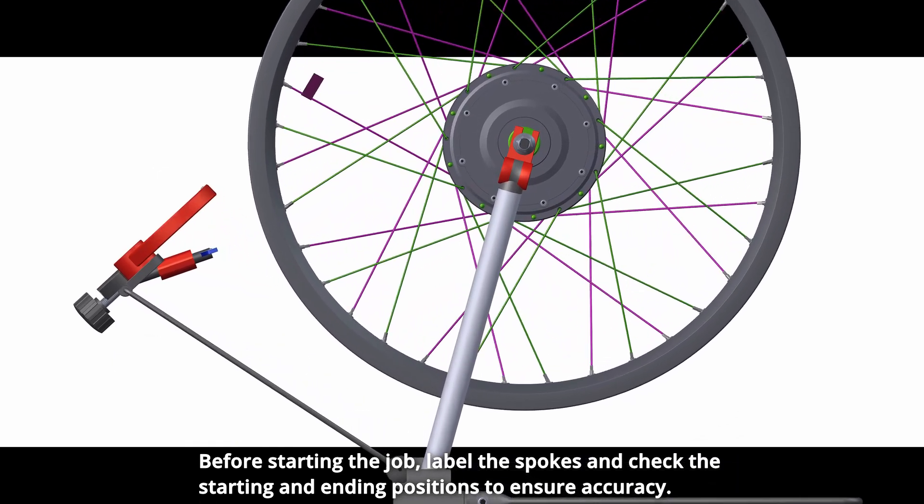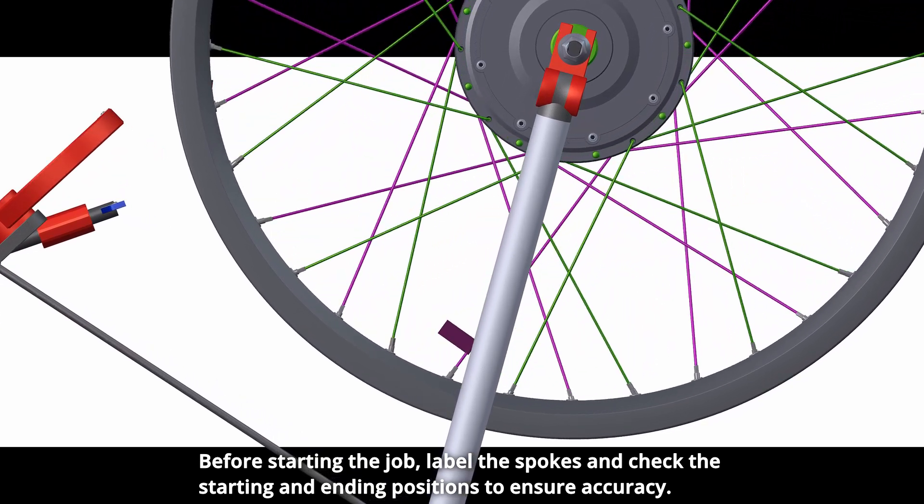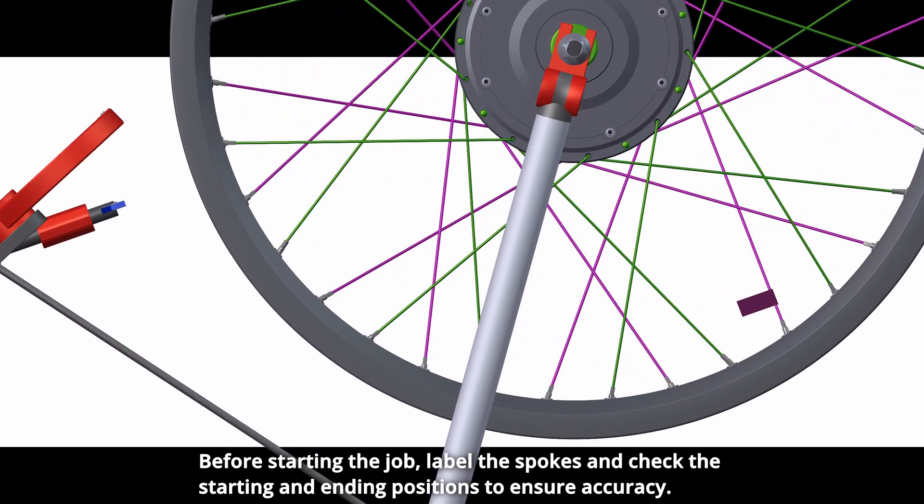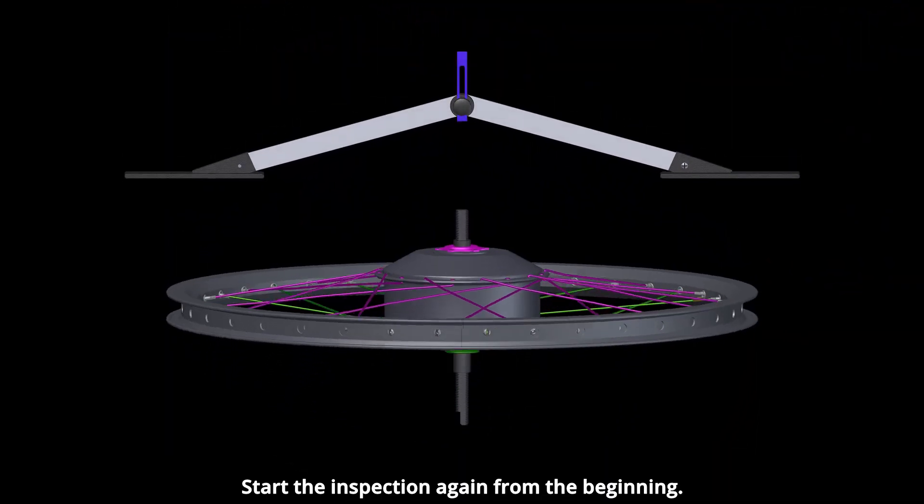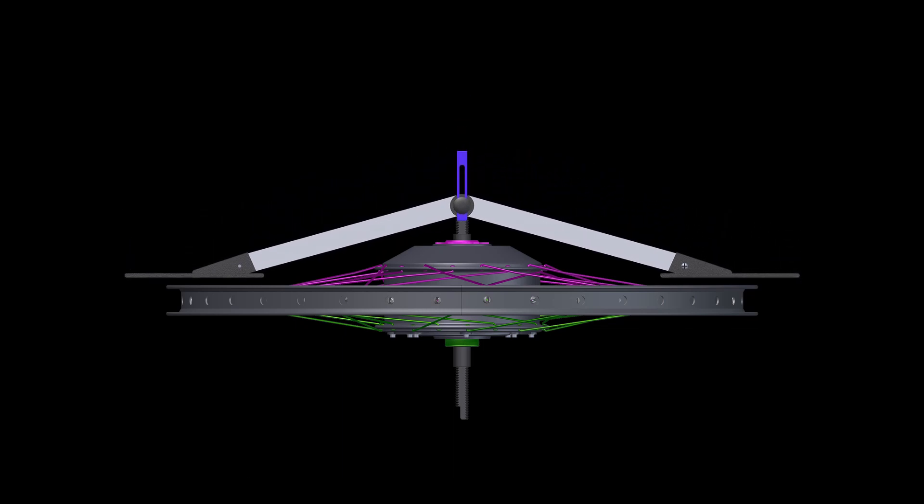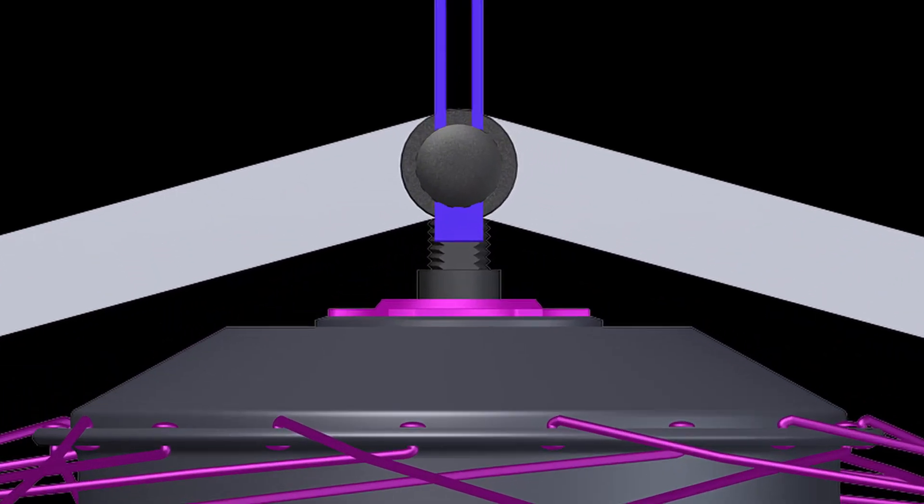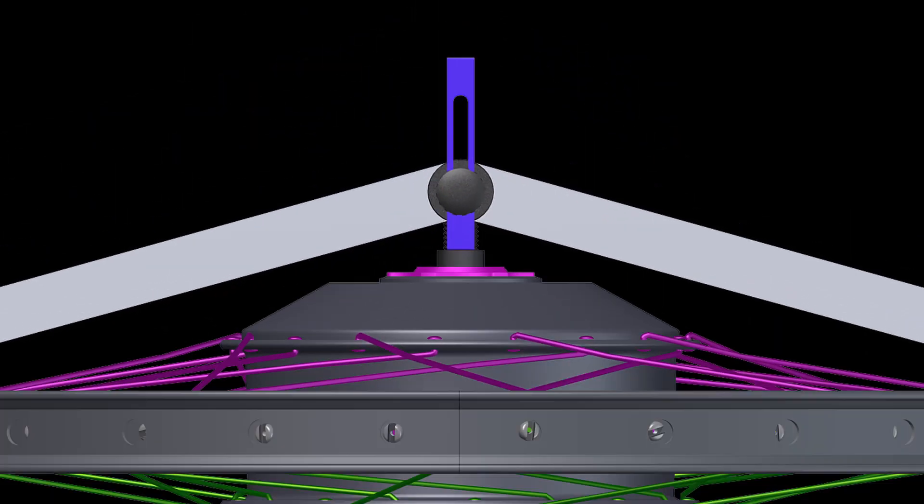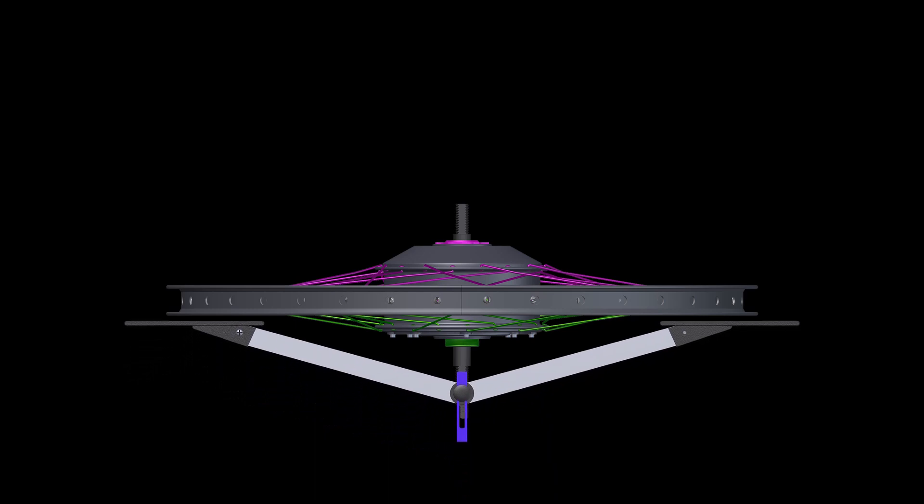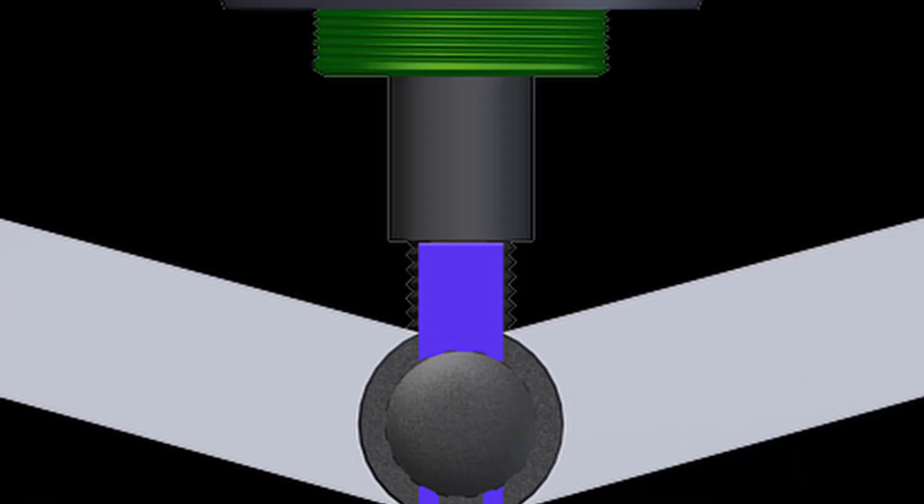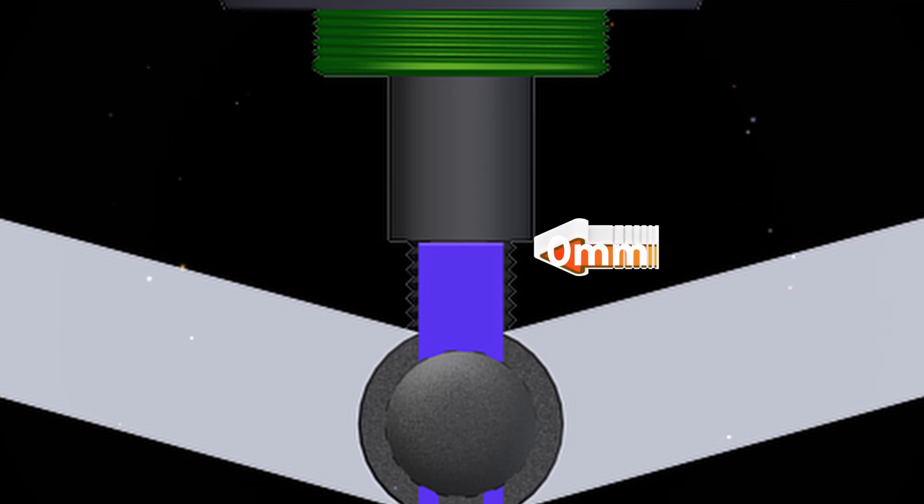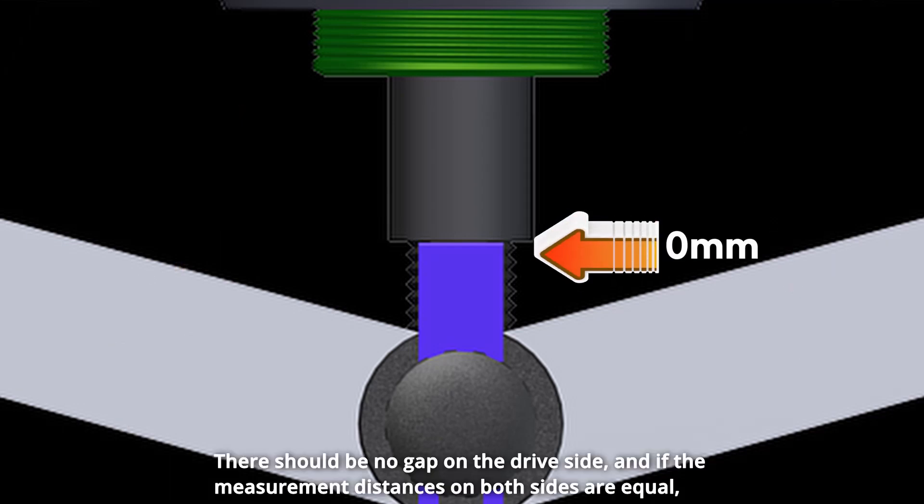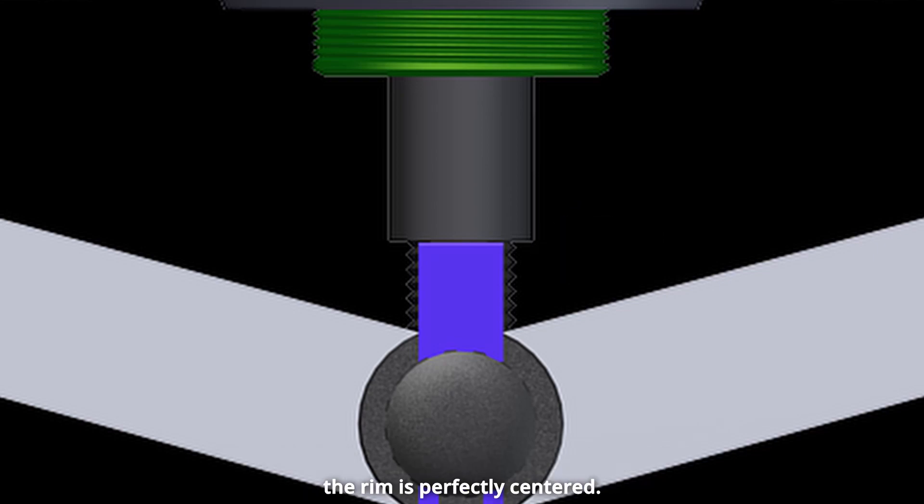Before starting the job, label the spokes and check the starting and ending positions to ensure accuracy. Start the inspection again from the beginning. There should be no gap on the drive side. And if the measurement distances on both sides are equal, the rim is perfectly centered.